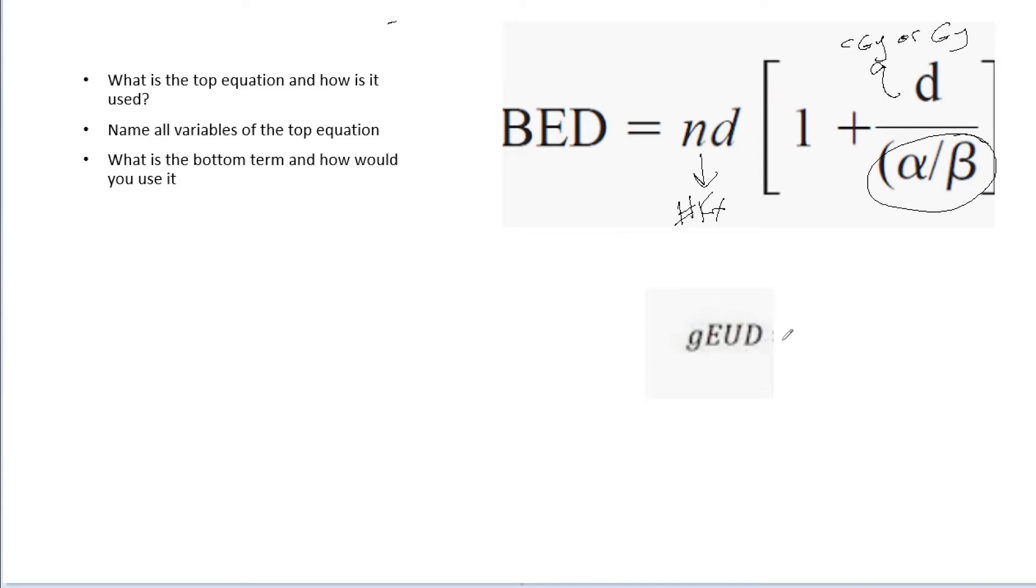So now this bottom is the generalized equivalent uniform dose. This is less commonly used, but it is a dose that if given uniformly to the entire organ of interest is going to yield the same complication rate as the dose distribution. To achieve the same tumor response with lower tissue dose, that's ultimately what we want to do.